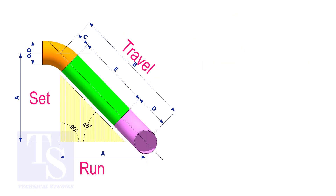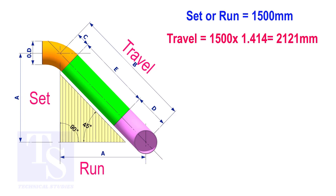Try another example. Suppose the value of the set or the run is 1500 millimeters. The value of the travel will be 1500 multiplied by 1.414, which equals 2121 millimeters.